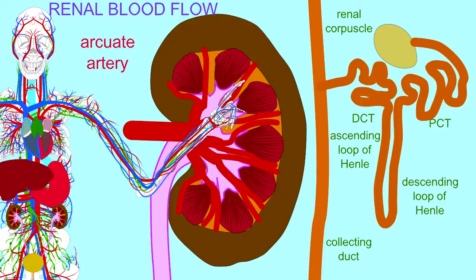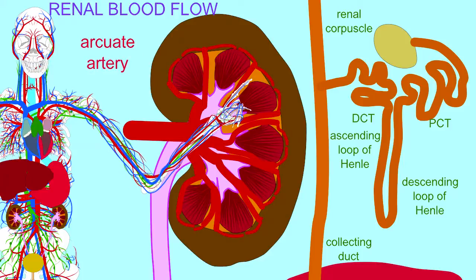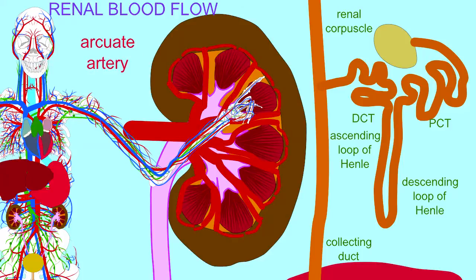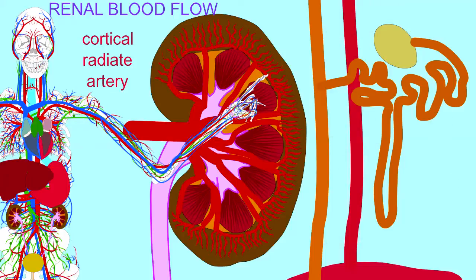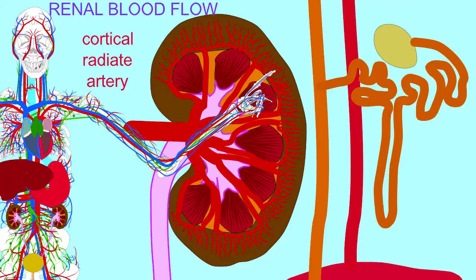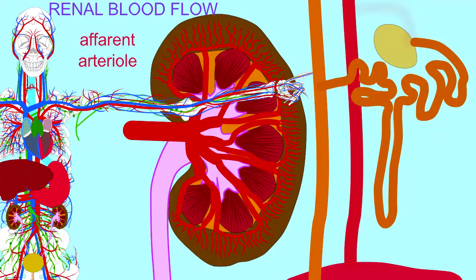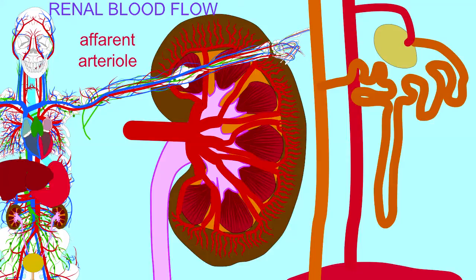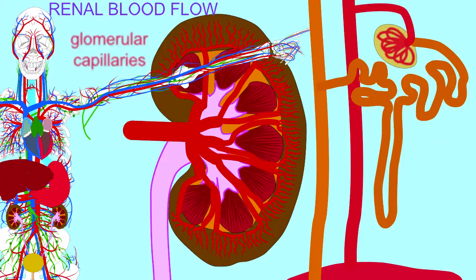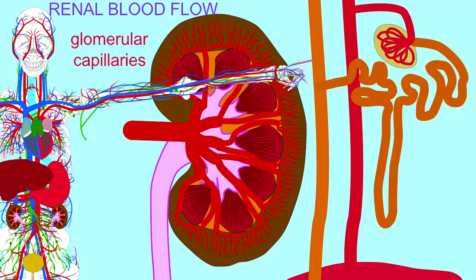These interlobar arteries form arcuate arteries as they arch over the pyramids in the renal medulla. From these arcuate arteries, cortical radiate arteries then approach the cortical tissue. Afferent arterioles depart from these and enter the renal corpuscle, forming the glomerular capillaries.